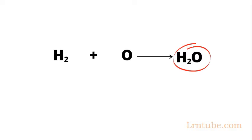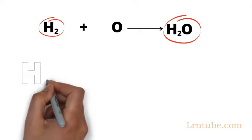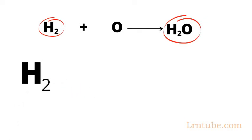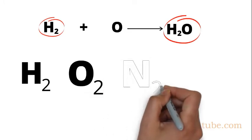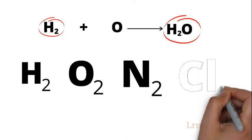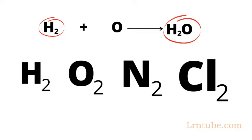When atoms of the same type combine, they produce a molecule of an element. Examples include hydrogen molecule H2, oxygen molecule O2, nitrogen molecule N2, and chlorine molecule Cl2. The combination of different types of atoms produces molecules of a compound.